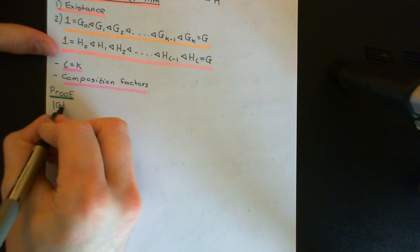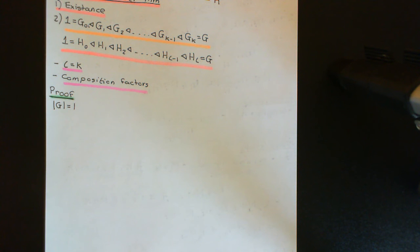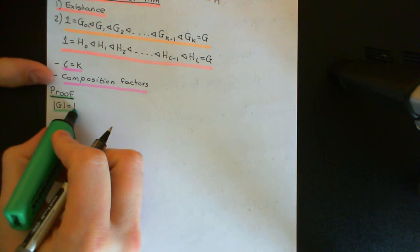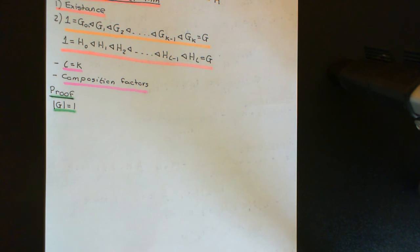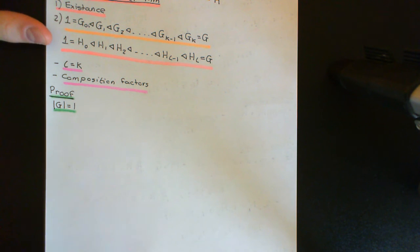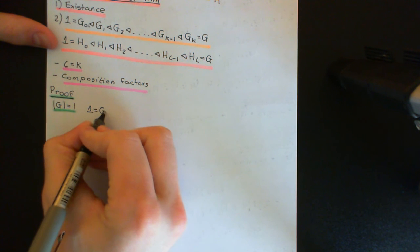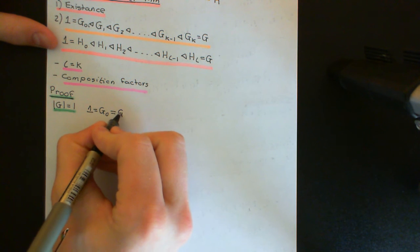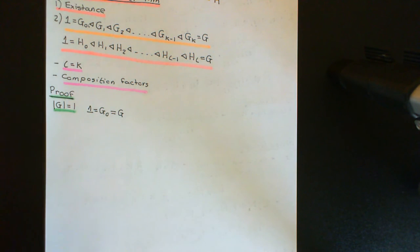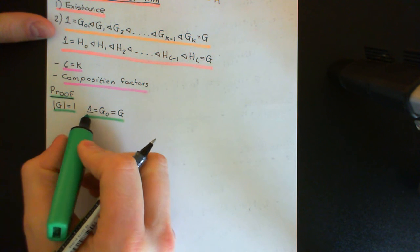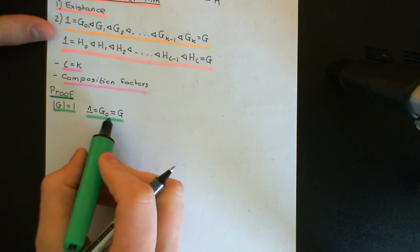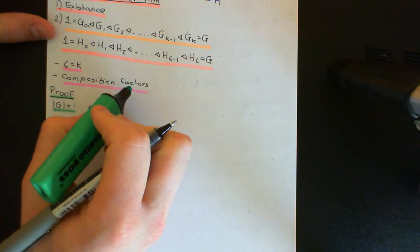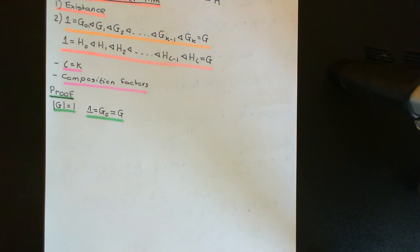So let's start with a group of order one and prove that part two of the Jordan-Hölder theorem is true for it. A group of order one is the trivial group — it contains a single element. The only composition series you can devise for the trivial group contains one subgroup: the trivial subgroup, which is also the improper subgroup, and it has length zero. It only has one composition series, so it is trivially true that the lengths are always going to be the same and that the composition factors — of which there are none — correspond.